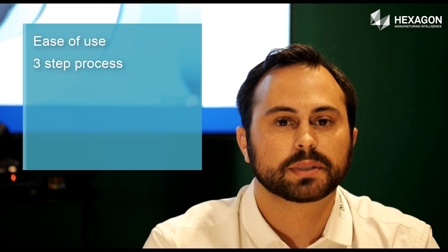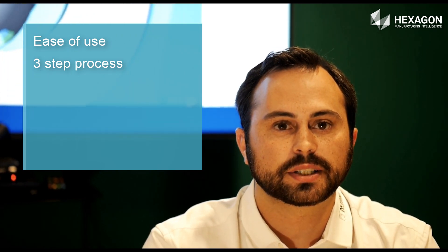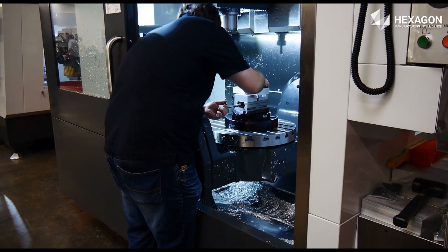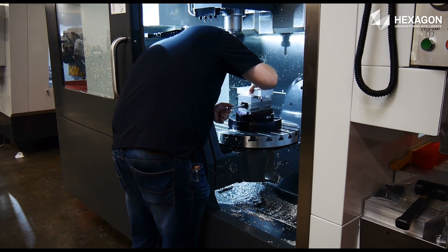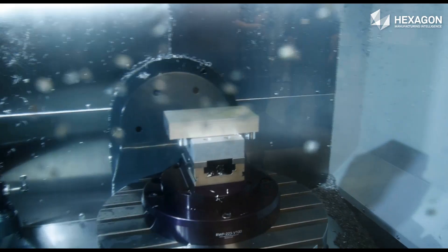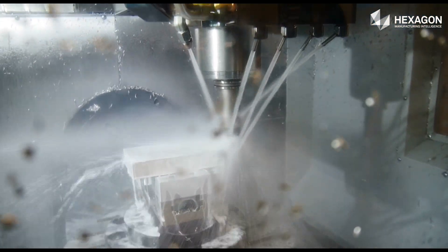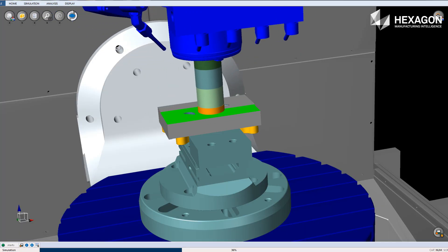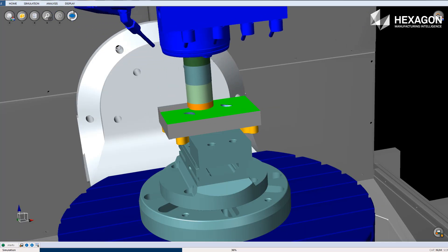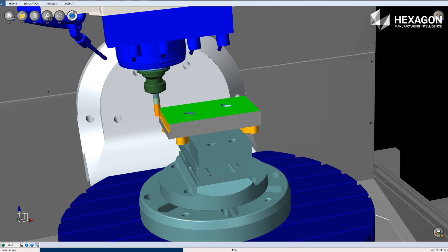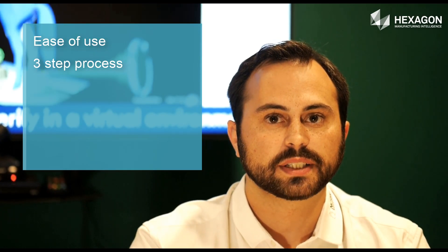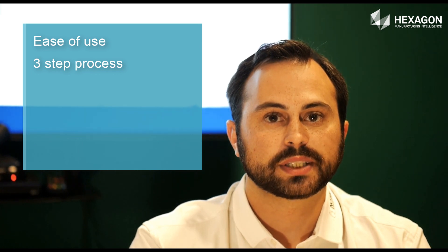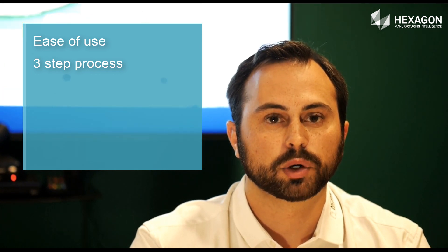Step two is the simulation, which can detect anything causing a collision or contacting the non-cutting portion of the tool. It is exactly what you do on the real machine when you single block your G-code program, replacing having to use the machine to test for collisions. Step three is called dimensional analysis — it's exactly what you do on the shop floor when you measure the part after the first piece is made. You check to see whether you've forgotten tool offsets or if features of the part are out of tolerance. Those are the three steps that drive the G-code validation for programmers.